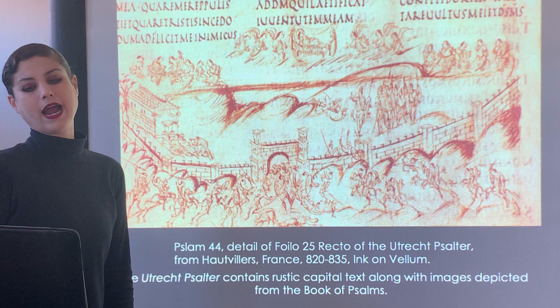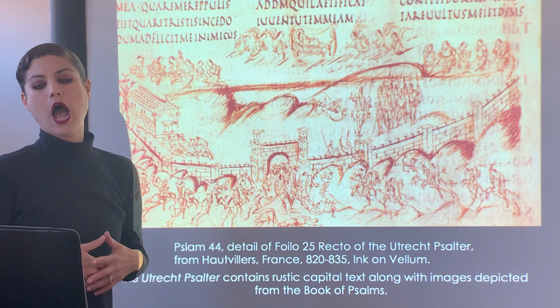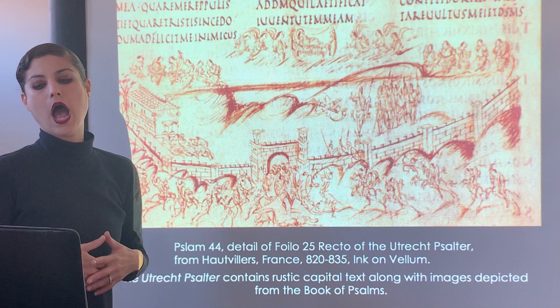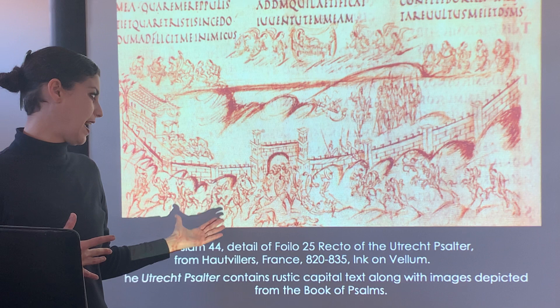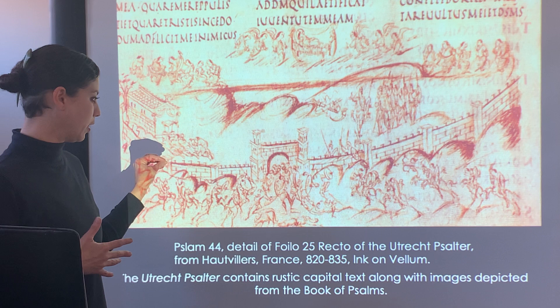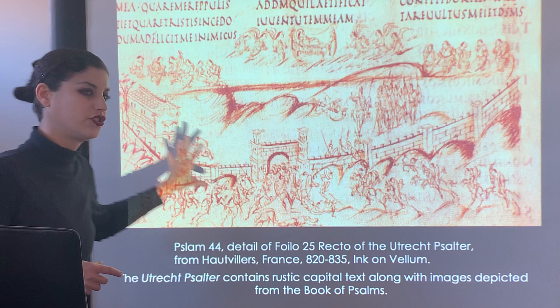This is from the Utrecht Psalter, also from France. The Utrecht Psalter contains rustic capitals along with images depicted from the Book of Psalms. This is just one page from that text — you can see it has a dark red ink on the vellum paper, and again you get that gestural feeling.